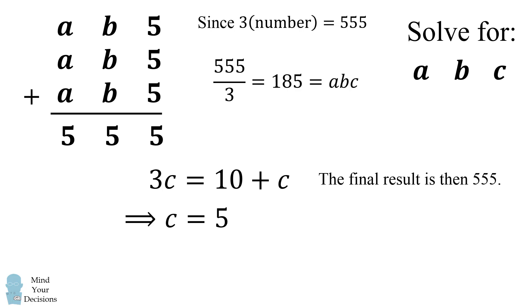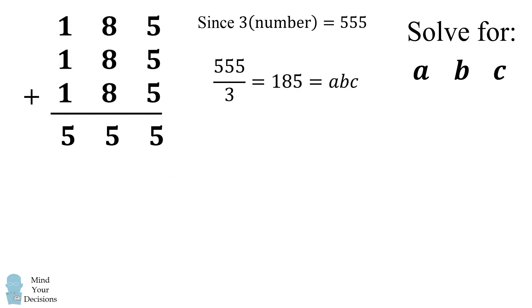555 divided by 3 is equal to 185. So that must equal abc. So a must be equal to 1 and b must be equal to 8. And this in fact works out.